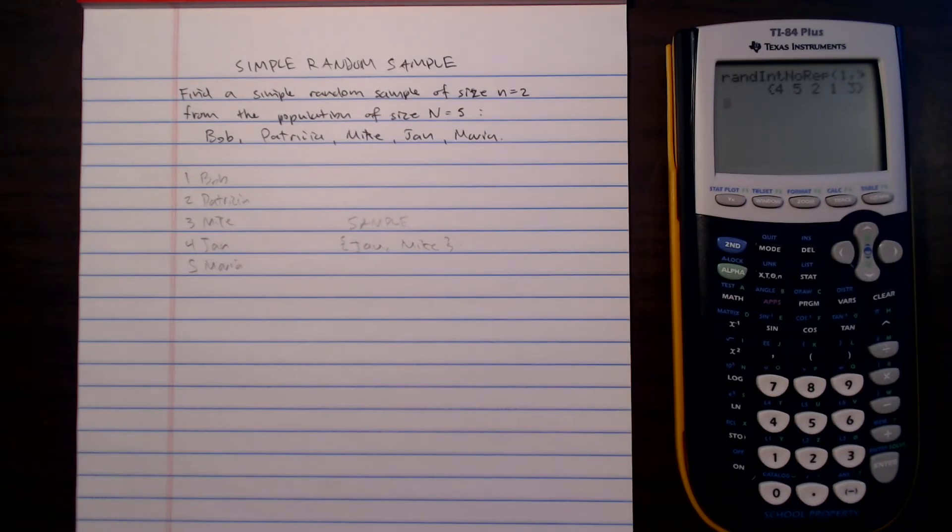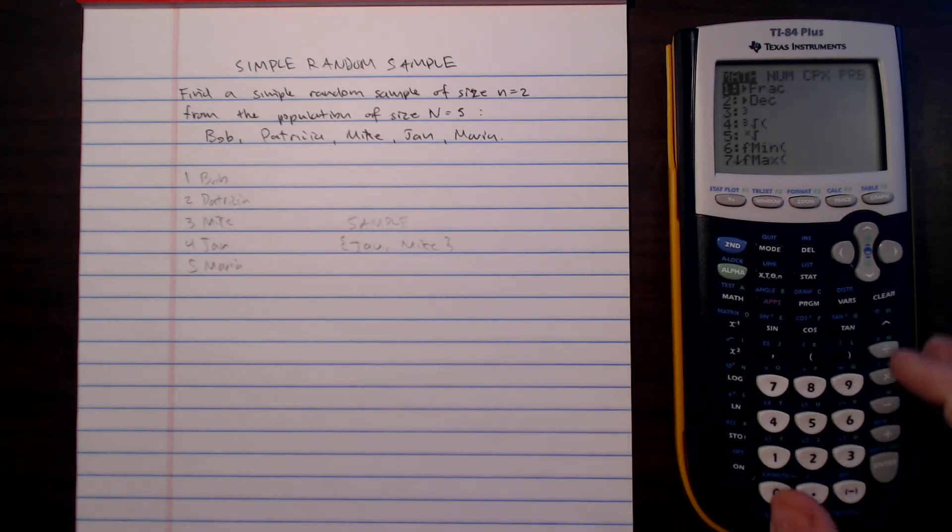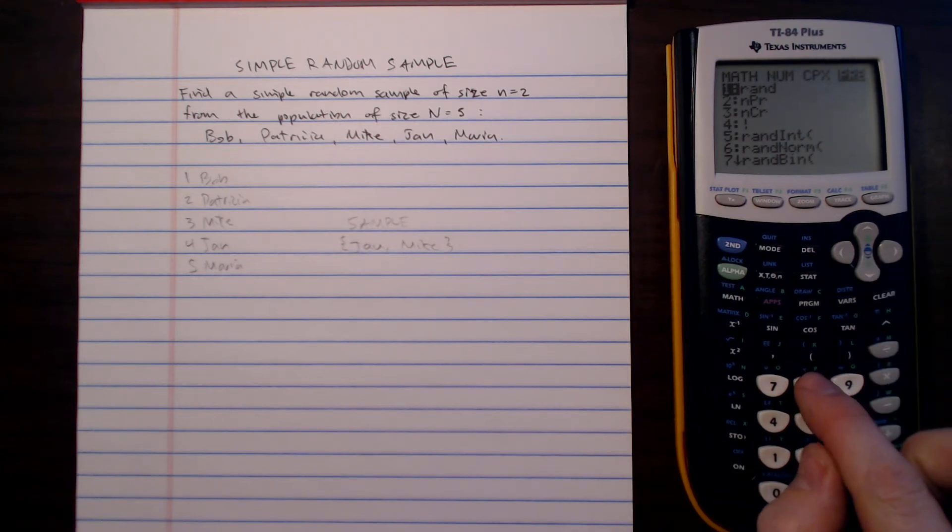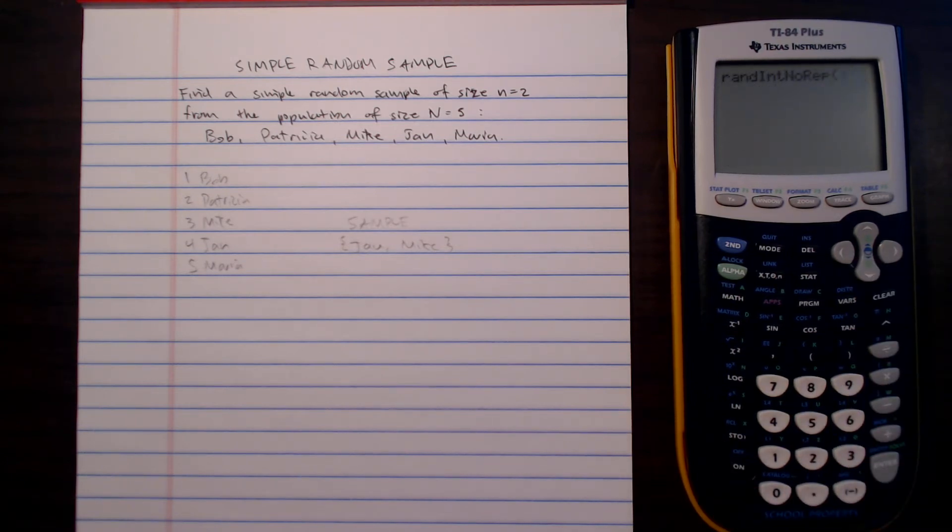Okay, so again with the TI-84 Plus, you want to hit math, then scroll over to probability, you can hit the number eight, which will give you random integer with no repetition.